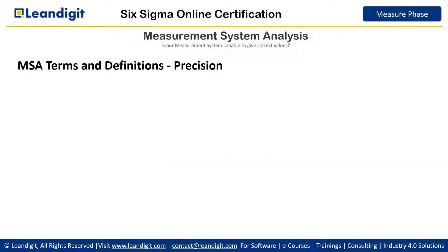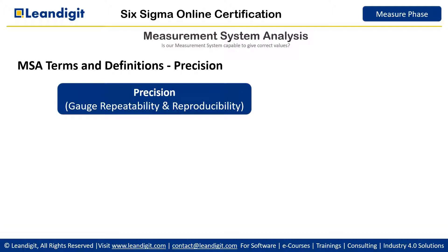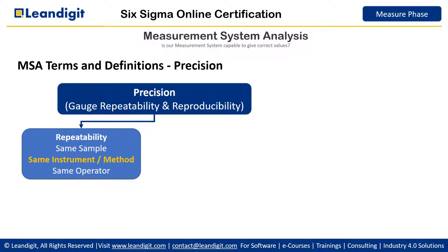Now we will discuss terms related to precision. Precision is also called gauge repeatability and reproducibility. Repeatability means when you use the same sample, the same instrument, the same standard operating procedure or method for measurement, and the same operator measures — that means nothing is changing. Everything in the measurement system is the same, yet we still get variation in measurement. This is called repeatability, or gauge repeatability.